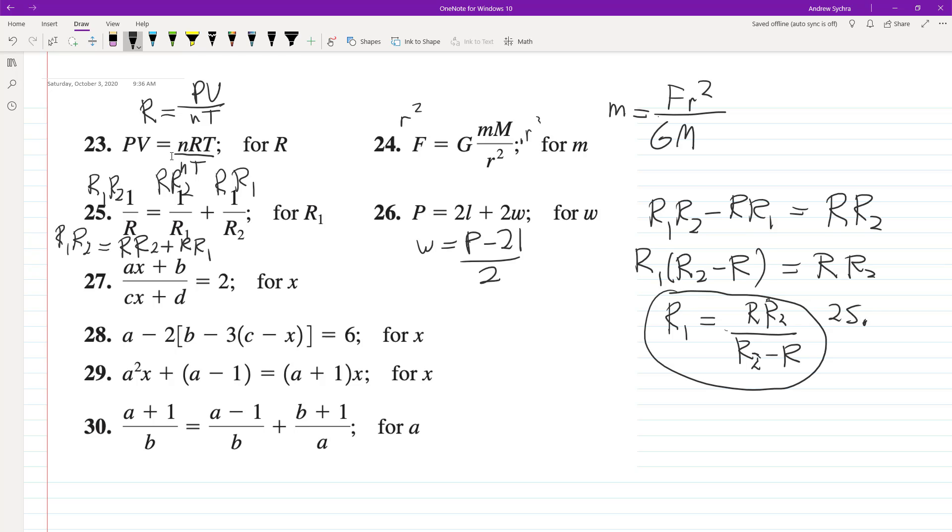All right. So for 27, solve for X. So what we'll do here is we'll multiply both sides by CX plus D, and then move all the X terms on one side. So we have AX minus 2CX equals 2D minus B and then factor out the X. So we have X is equal to 2D minus B divided by A minus 2C.